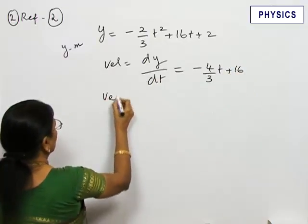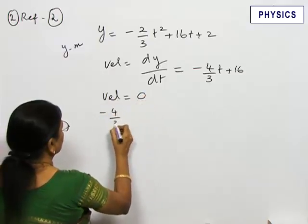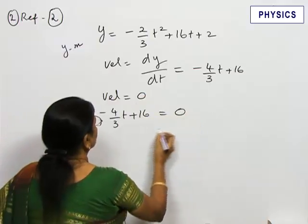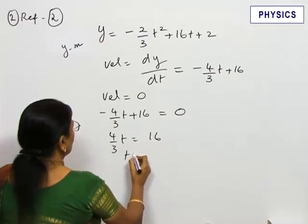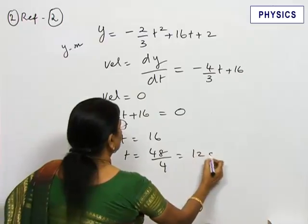When the body stops moving its velocity equal to 0. Minus 4 by 3 t plus 16 should be equated to 0, or 4 by 3 t equal to 16, or t equal to 48 by 4, 12 seconds.